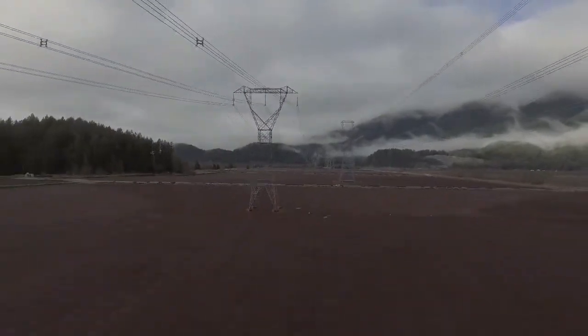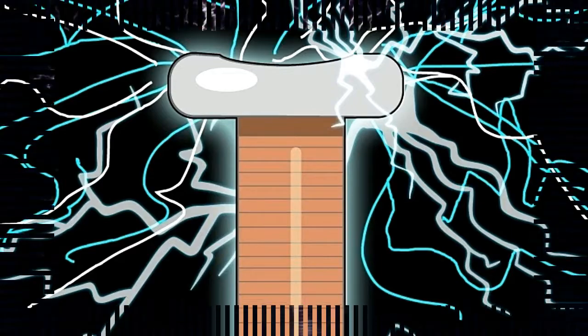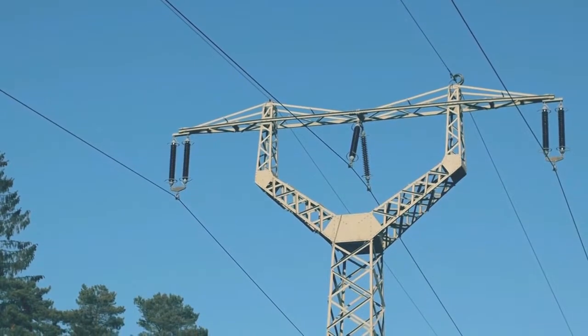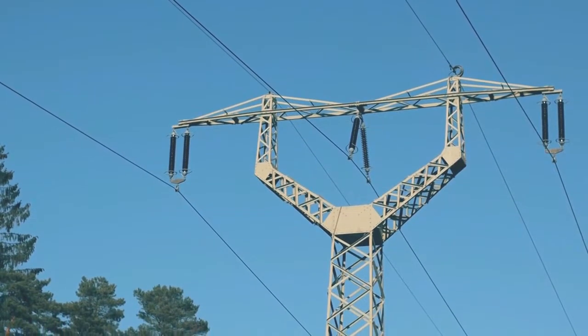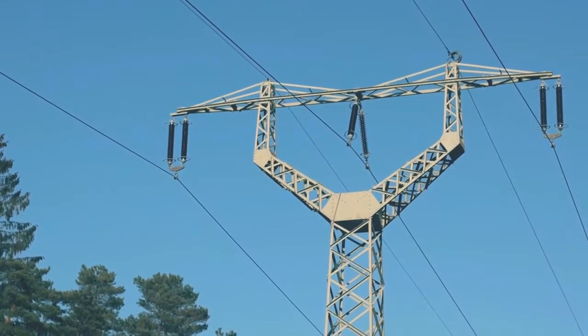As there is not enough voltage to maintain the arc across the spark gap, the arc extinguishes. This allows the capacitor to charge again and the whole process repeats itself.